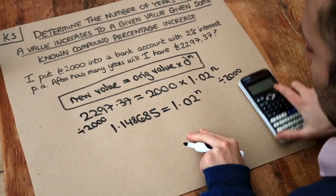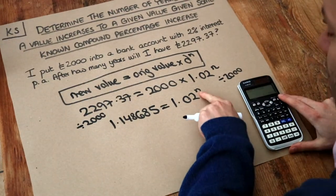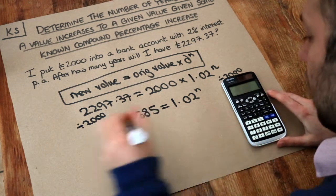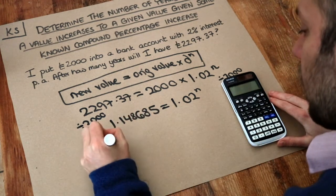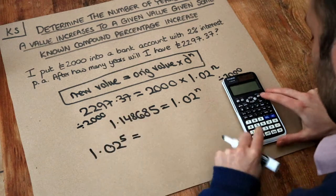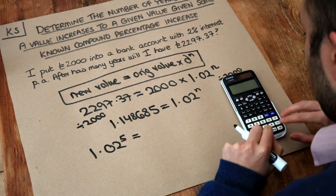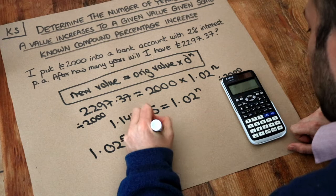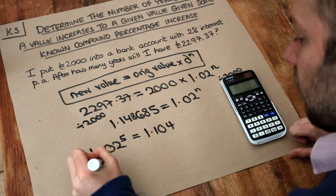Now we could just use trial and error to do this. We can keep on trying different powers of n until we get this value here. So if we tried, for example, 1.02 to the power of 5, that gives us 1.104. That's too small, but we're getting close.